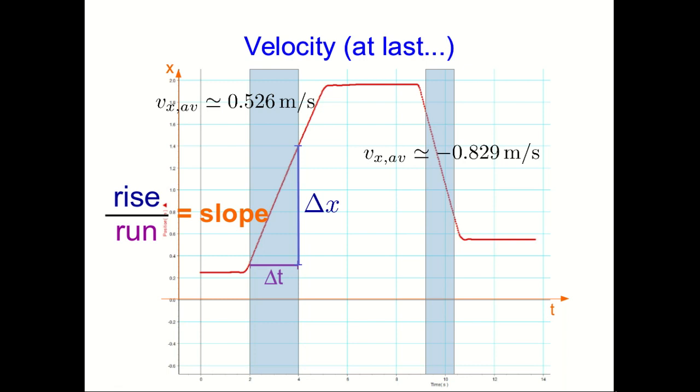so the velocity was positive when the cart was going right, and the velocity was negative when it was going left. And it was going in the positive direction in that early time interval, and the negative direction in that later time interval.